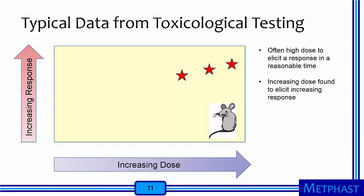On the y-axis is increasing response, and on the x-axis is increasing dose. Rodent tests are often conducted at very high dose to elicit a biological response that we can see in a reasonable amount of time. This data shows a clear increase of response with increasing dose.